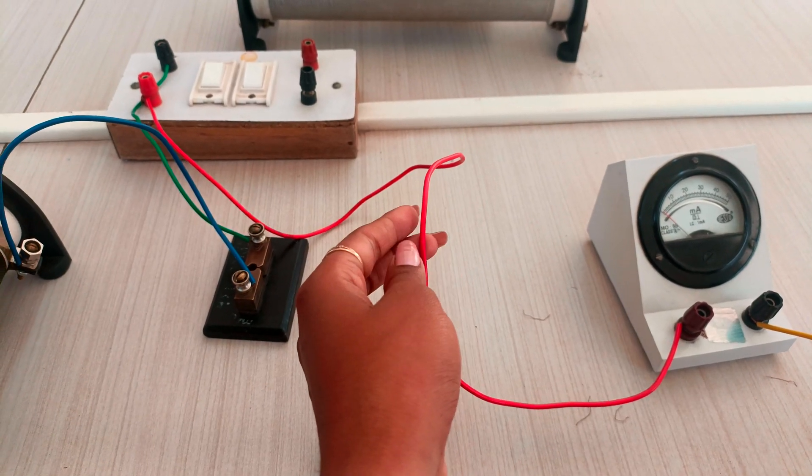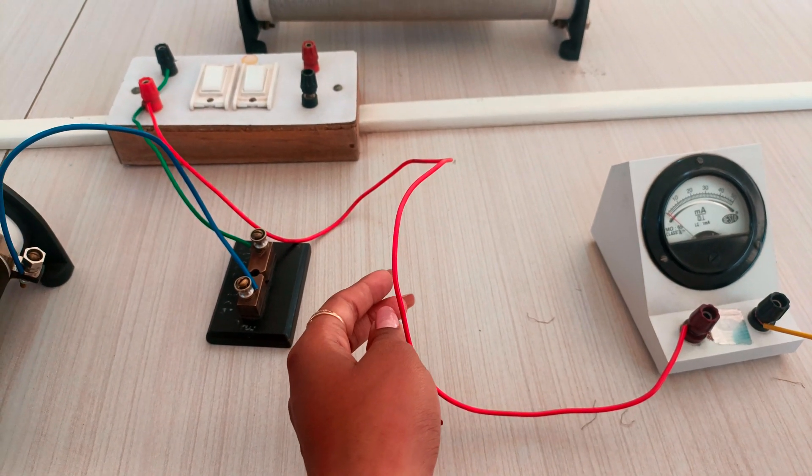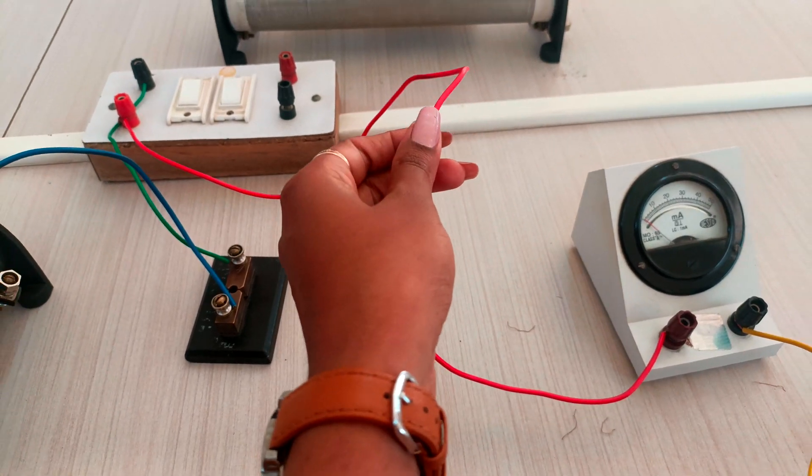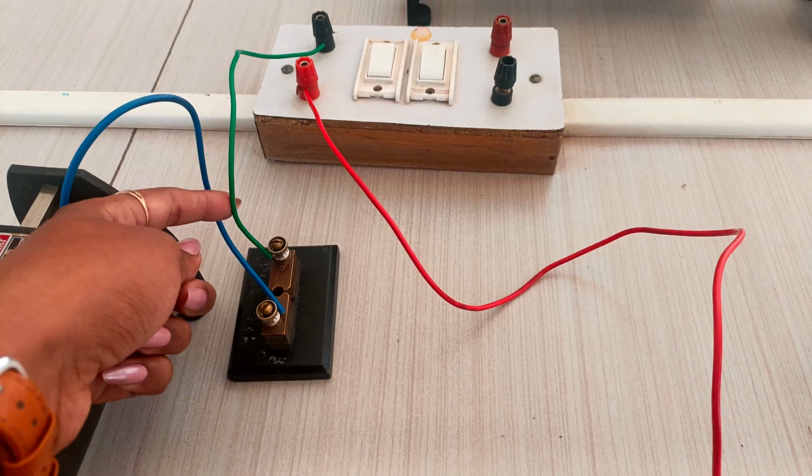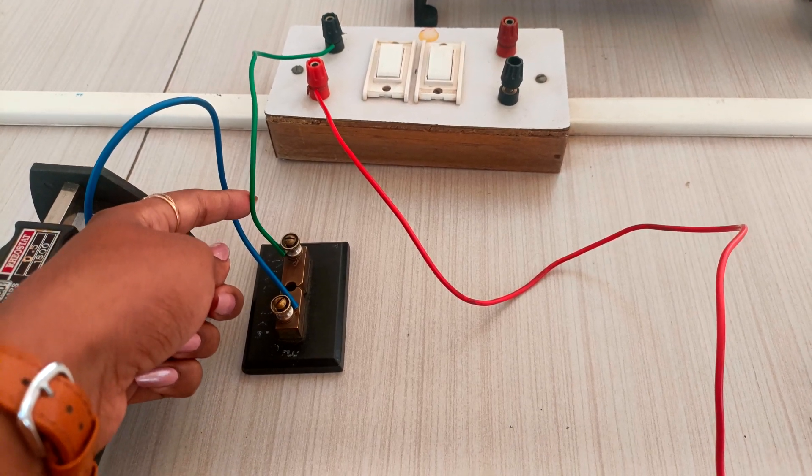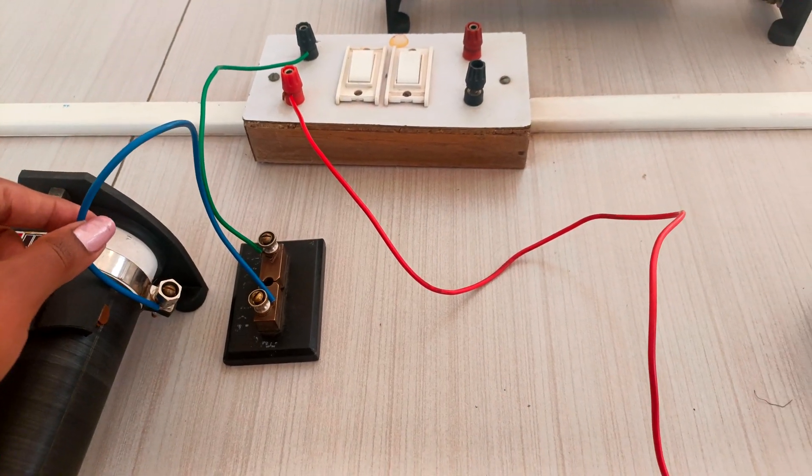We will do the connection from the battery as a reference. You can observe in the video: from the negative of the battery, we connected that to the plug key.